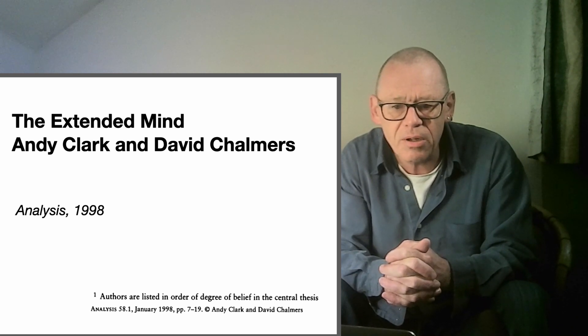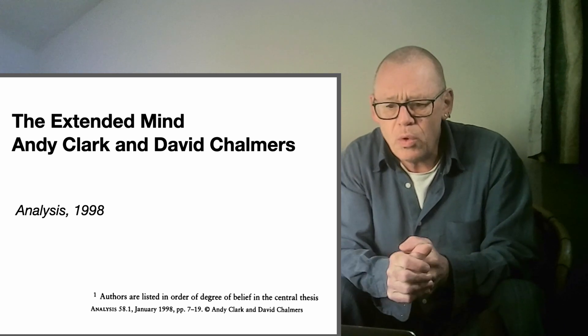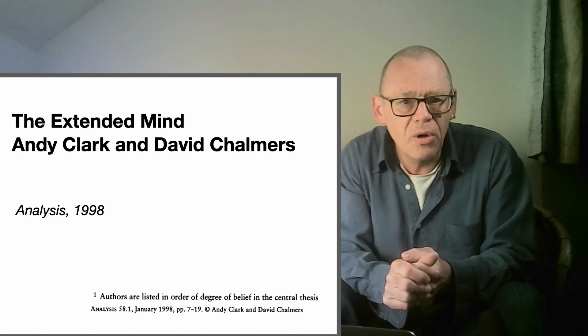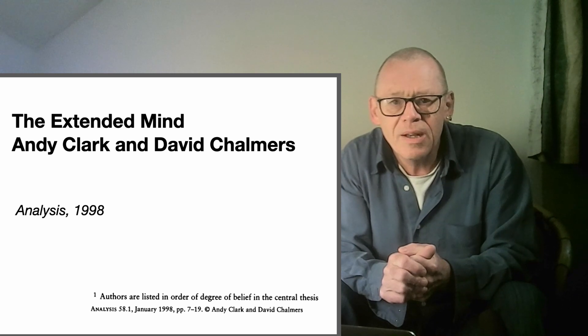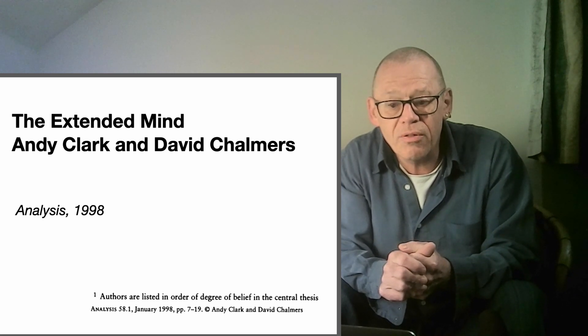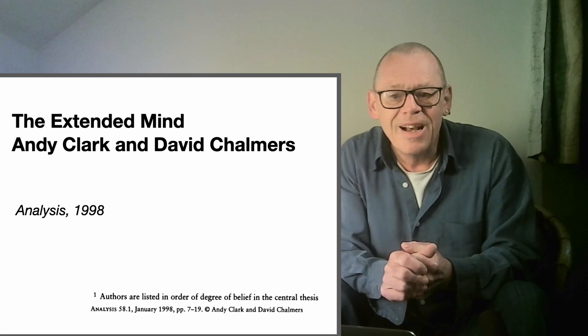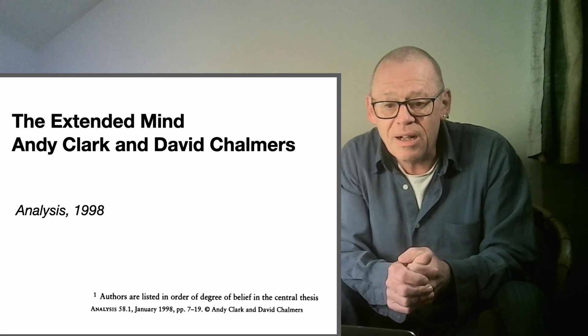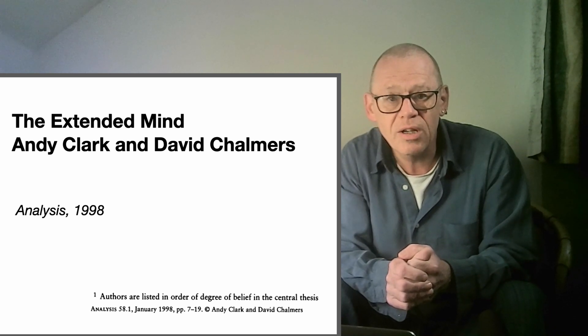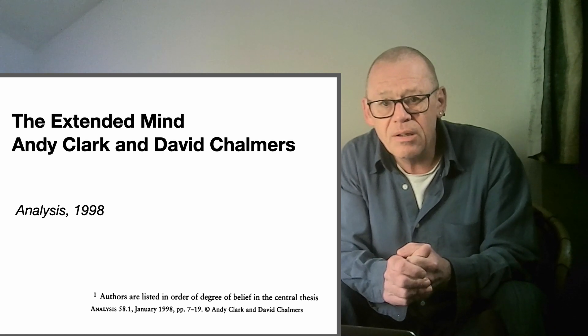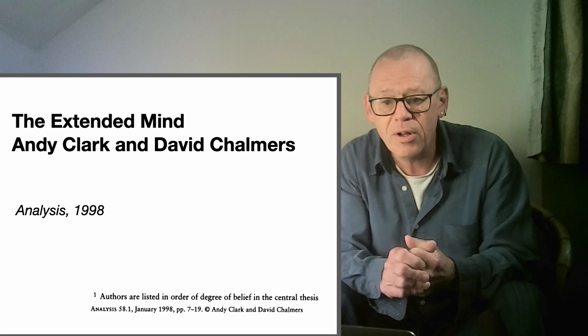They're both very central to cognitive science. They don't peddle a single view, mind you. It's worth noting that at the bottom of the first page of the article, there was this little footnote that said the authors are listed in order of degree of belief in the central thesis. In the time since then, Andy Clark has become ever more associated with the notion of the extended mind, and Dave Chalmers has largely gone on to rather different and more radical philosophical positions.